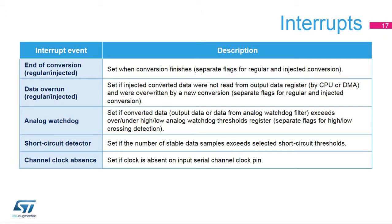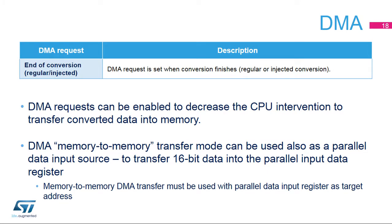A set of interrupts related to DFSDM events has been implemented to increase CPU performance. Interrupt sources include end-of-conversion events with separate flags for regular and injected conversions, data overrun events with separate flags for regular and injected conversions, analog watchdog events, short circuit detector events, and channel clock absence events. To decrease CPU intervention, conversions can be transferred into memory using DMA transfers for injected and regular conversions separately. The DMA controller can also be used for fast data transfers into parallel data registers, transferring parallel data from a memory buffer into the parallel data register, with the DMA configured in memory-to-memory transfer mode.